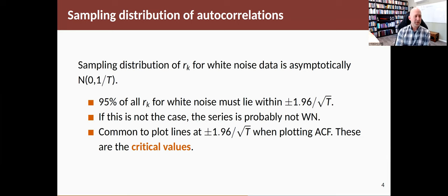If you generally don't see 95% of those values lying within the bands, or you get some that are a long way outside the bands, then probably the series was not white noise to start with. It's very common and the default in the packages we're using to plot those lines so you can check that your spikes, all of those rk values, look like they're coming from a white noise series.